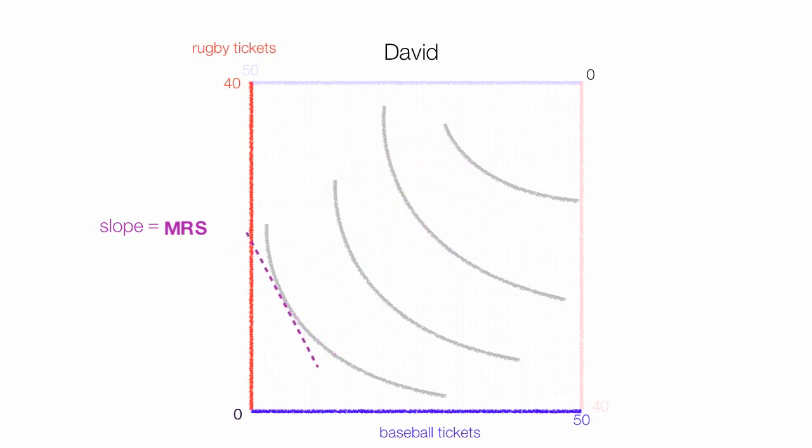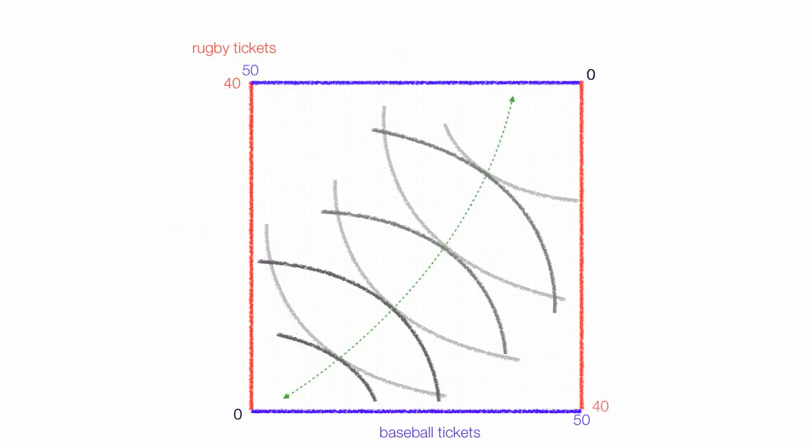Now when I draw Joe's back in his indifference map in the contract line, you'll find that they touch these green points are located where the marginal rate of substitution for David and Joe are equal. So David's MRSD or marginal rate of substitution for David is equal to Joe's marginal rate of substitution noted by a J.